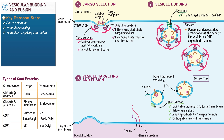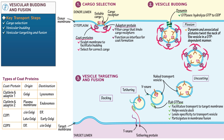Show the tethering step as follows: show that the Rab GTPase on our vesicle binds to the tethering protein and moves closer to the target membrane. Both of these proteins must match in order for this step to proceed. Finally, indicate that the tethering protein and Rab GTPase match, thus allowing the vesicle to enter the docking phase. If they do not match, the vesicle dissociates and Rab GTPase continues the search for its correct destination.